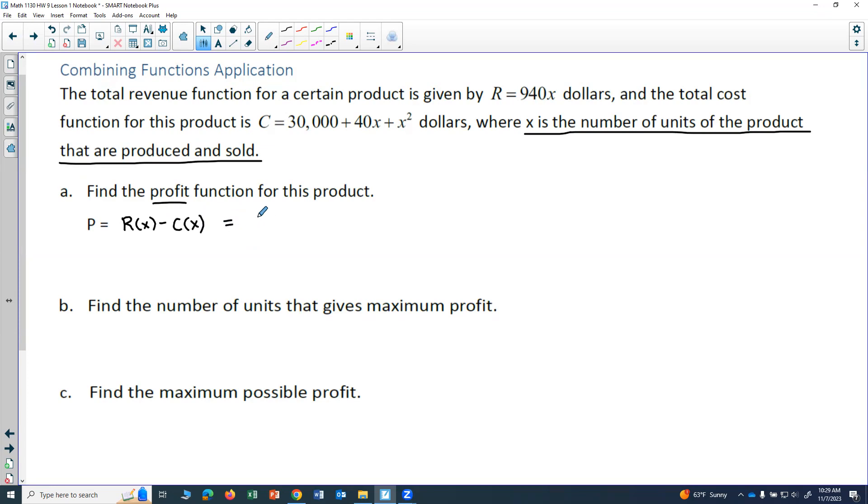So I'm going to have my revenue, which was 940x. I'll subtract the entire cost. When I'm doing the subtraction, I want to make sure I put the subtraction and then parentheses, and then my entire function that I'm subtracting. So I have 30,000 + 40x + x².